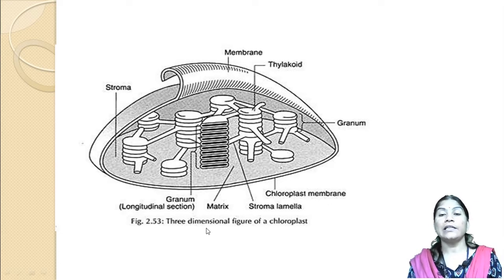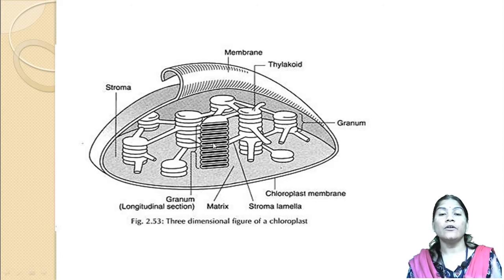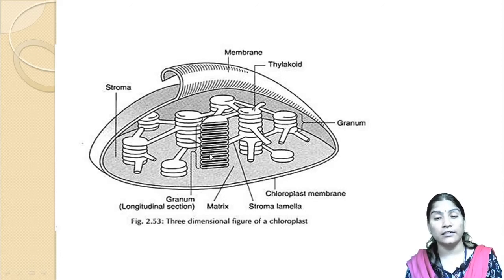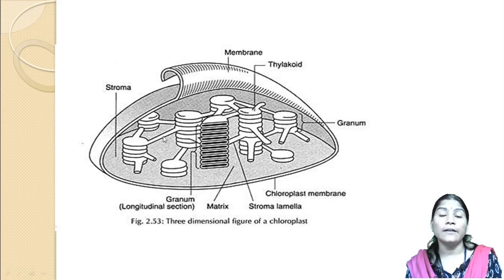This picture shows the three-dimensional structure of the chloroplast. There is the outer and inner membrane with an intermembrane space between them. The fluid-like substance inside is the stroma. The stacks of thylakoids form the grana. In between these grana there is a linking structure called the lamina.